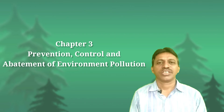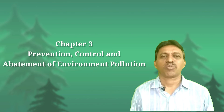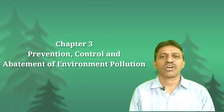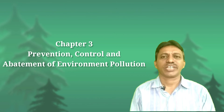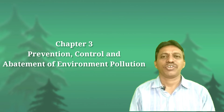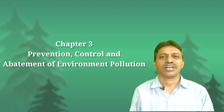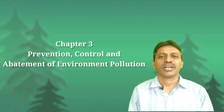The third chapter is the Prevention, Control and Abatement of Environmental Pollution. In this chapter, it covers protection, control, and measurements. Initially, the penalty was about 2 years in jail, which was not enough. Now, with the latest amendment — the 17th amendment — the penalty is about 1 crore rupees.